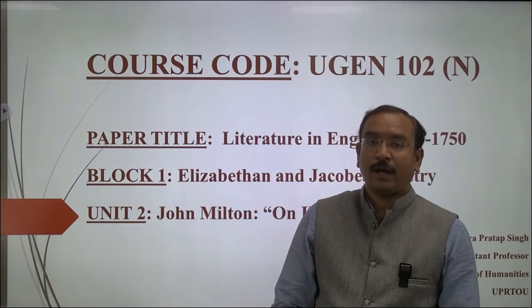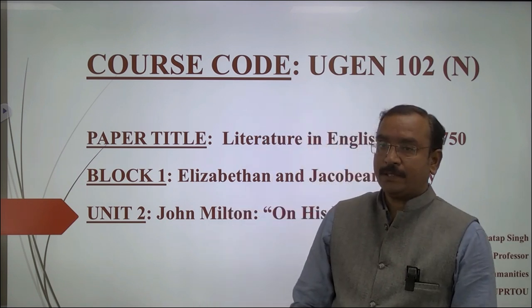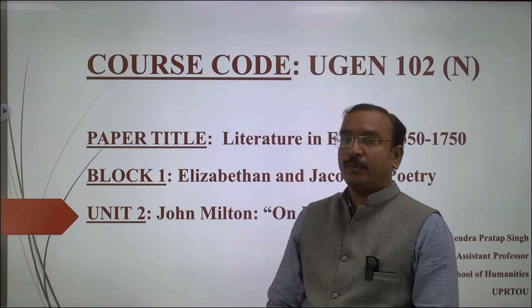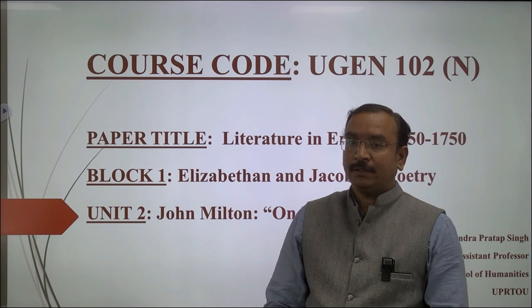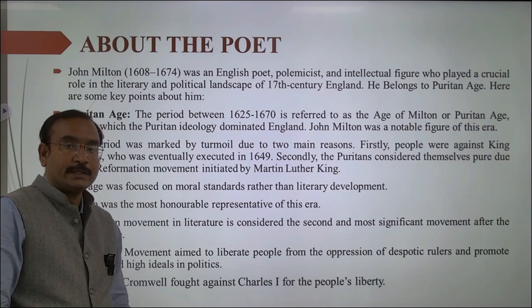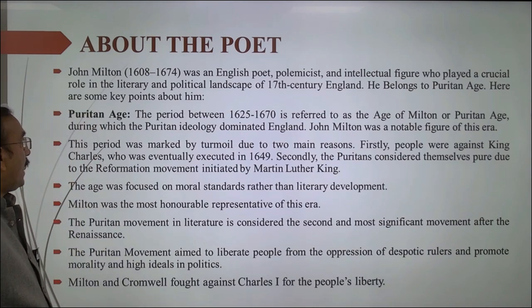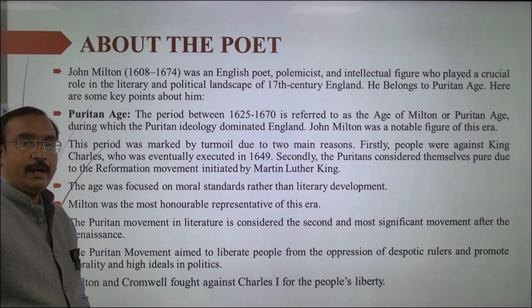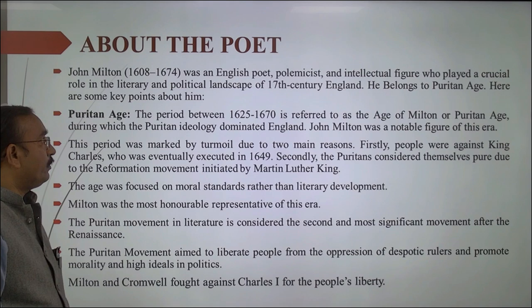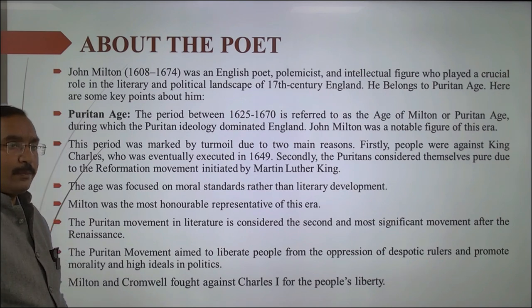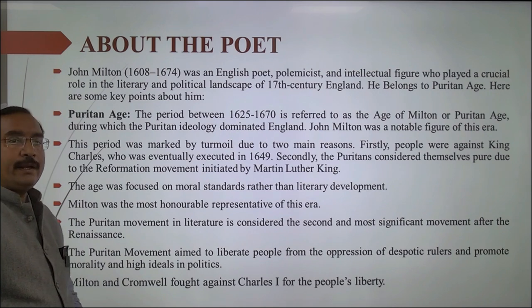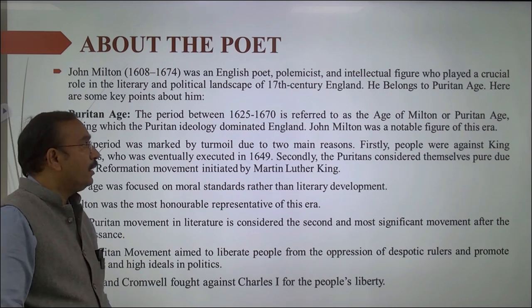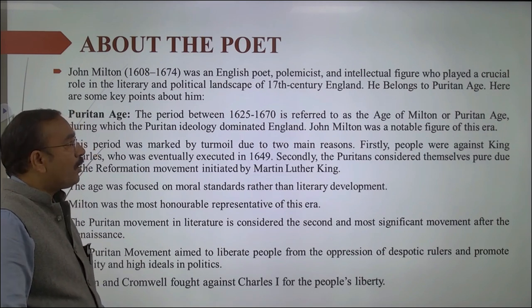Hello dear learners. Today I am going to discuss BA English course code UGEN 102, English Literature 1550 to 1750, Block First, Unit Second: John Milton 'On His Blindness.' John Milton was an English poet, polemist, and intellectual figure who played a crucial role in the literary and political landscape of 17th century England. He belongs to the Puritan age.